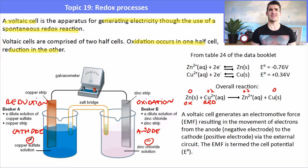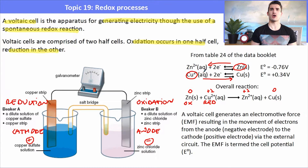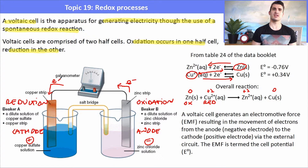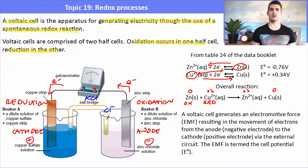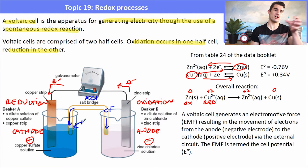Electrons flow from the anode to the cathode. From the data book, zinc is higher up the table so it undergoes oxidation to form zinc ions; Cu²⁺ is lower and undergoes reduction to form copper solid. Zinc loses electrons and is the stronger reductant; copper gains electrons and is the stronger oxidant. In the salt bridge, anions move towards the anode and cations towards the cathode — so Cl⁻ heads to the anode and K⁺ to the cathode when using KCl.